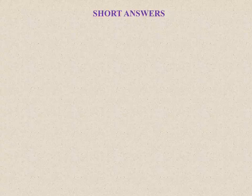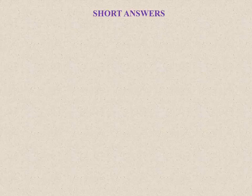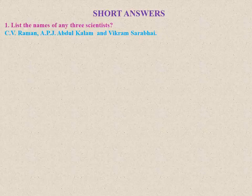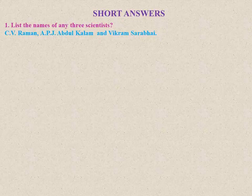Dear students, we have already discussed meanings and fill in the blanks from Unit 2. We have learned all the meanings and fill in the blanks. Now we are going to learn short answers. First question: list the names of any three scientists. You have to write any three scientists' names — for example, C.V. Raman, A.P.J. Abdul Kalam, and Vikram Sarabhai. You can write whichever scientists you like.